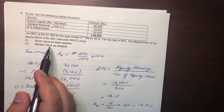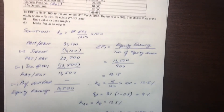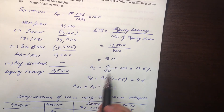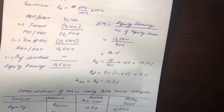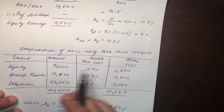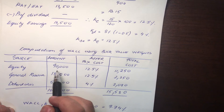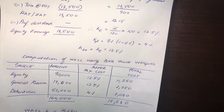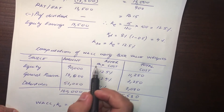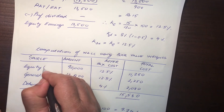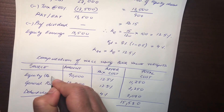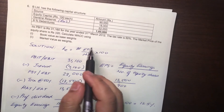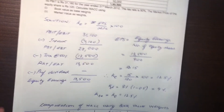Now we have to find out WACC using market value as weights. Everything remains the same — KE and KD don't change — but the equity capital amount will change. For market value weights, we are no longer going to use the book value of Rs. 100 per share. We are going to use the market value, which is Rs. 120.